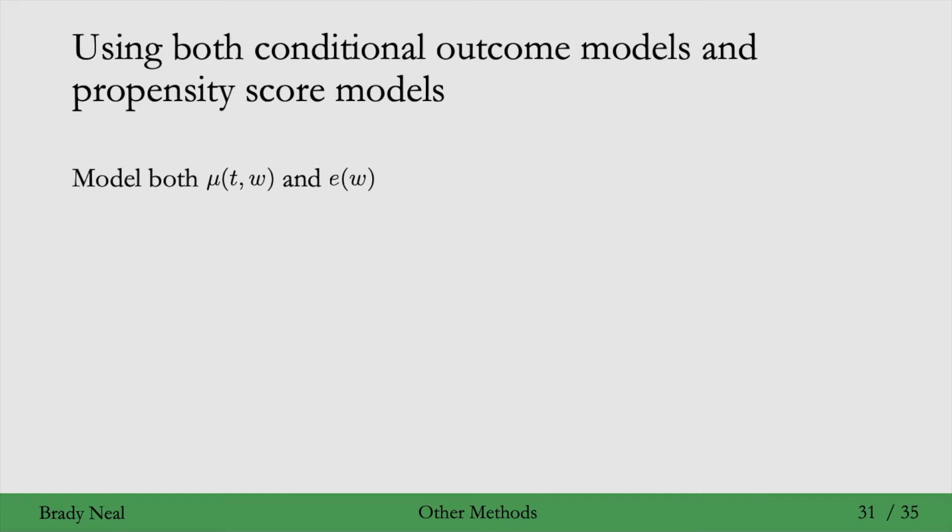So to see a natural example of such an estimator that uses both of these, first consider a COM estimation. And then from the propensity score theorem, we know that conditioning on W is just as good as conditioning on the propensity score. So we can get an estimator that uses both the conditional outcome model and the propensity score model by just plugging in the propensity score for W here.